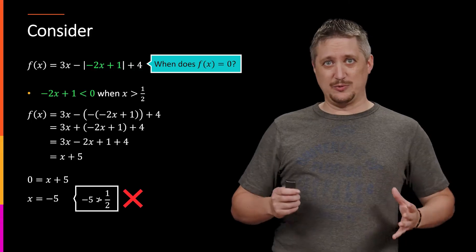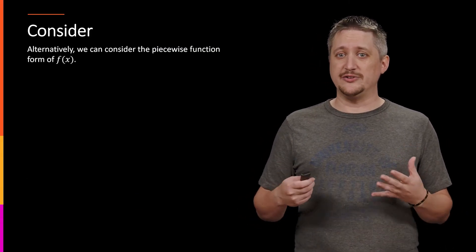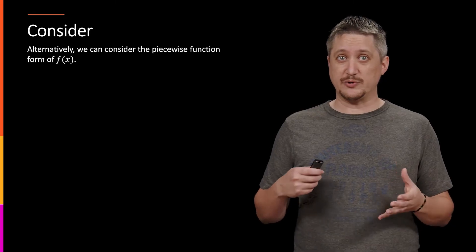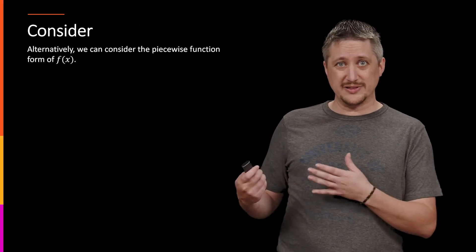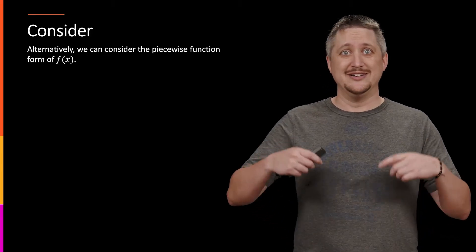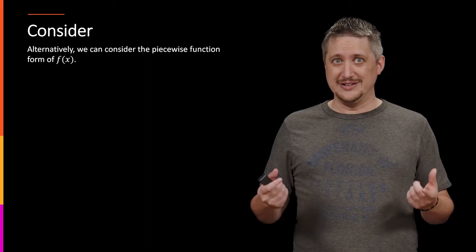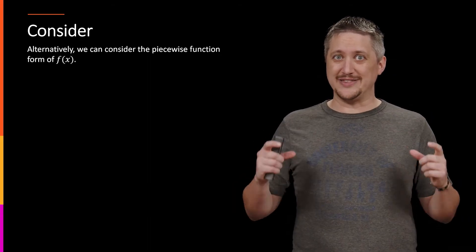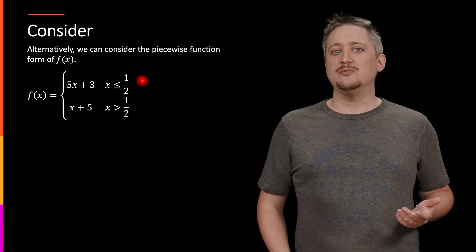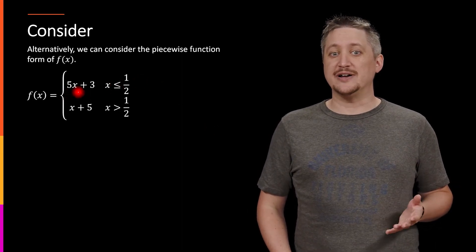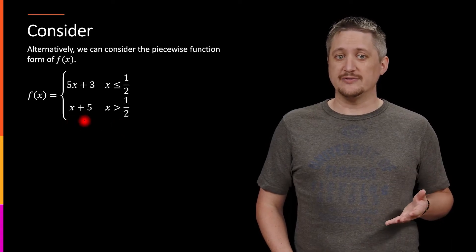Now, this is the classic way of doing this. But alternatively, we could actually consider the piecewise function form directly. So we know how to get the piecewise function form and it's really the same thing we were just doing. We find where the interior is positive or negative and accordingly simplify the equation with those two domains. So we would get exactly what we got. When x is less than or equal to 1/2, we got 5x + 3. When x is greater than 1/2, we got x + 5.